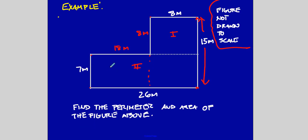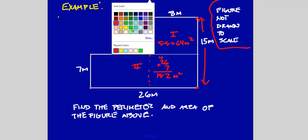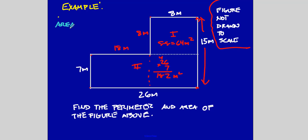Let's do the area first. Rectangle one is 26 by 7 — that's 182 square meters. Rectangle two is 8 by 8, so that's 64 square meters. The total area of the figure is area one plus area two: 182 plus 64 equals 246 square meters.